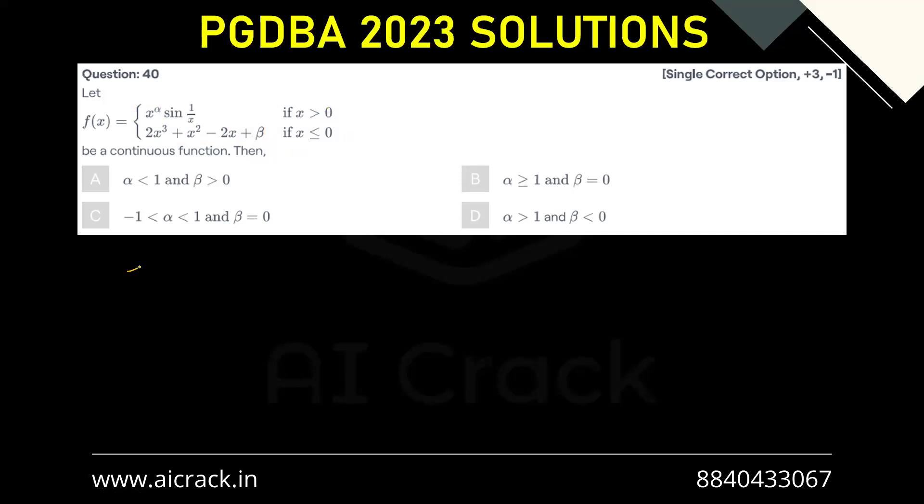So our basic condition would be f of 0 equals RHL equals LHL. So f of 0 would be using this function because of the equality over here. So this would be 2 into 0 plus 0 minus 2 into 0 plus beta. That comes out as beta only.